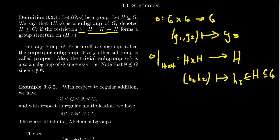Every group has at least two subgroups. The first is commonly referred to as the improper subgroup, which is just G itself. By definition, if you restrict the operation from G to G — which is really no restriction whatsoever — you'll have this group sitting inside itself. And so it's commonly referred to as the improper subgroup. In contrast, a proper subgroup will be a subgroup over some proper subset of the group.